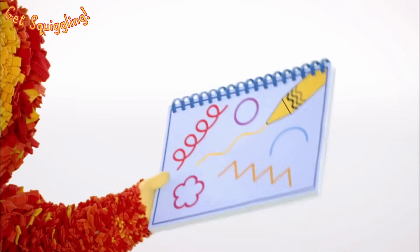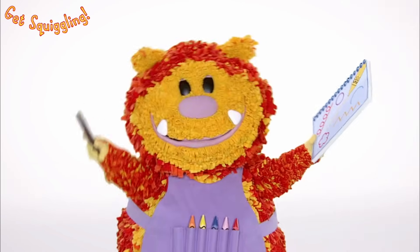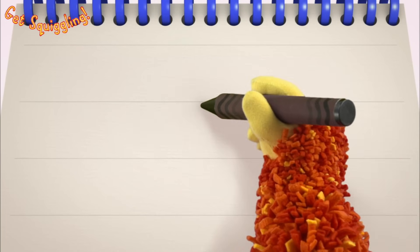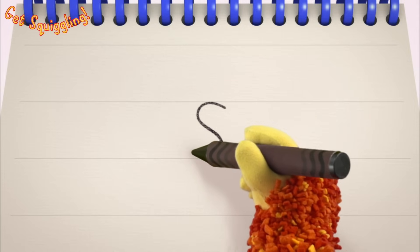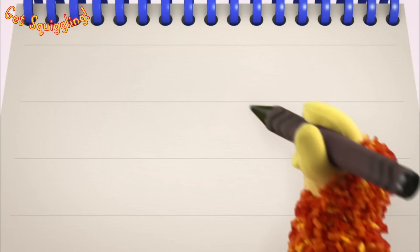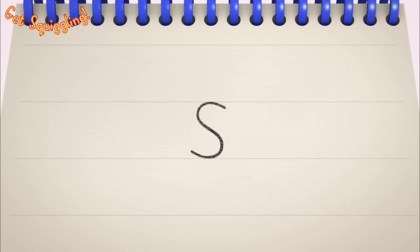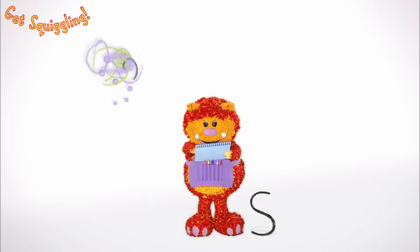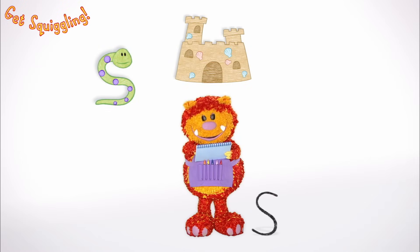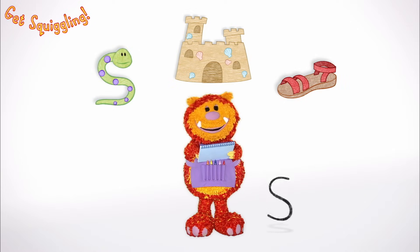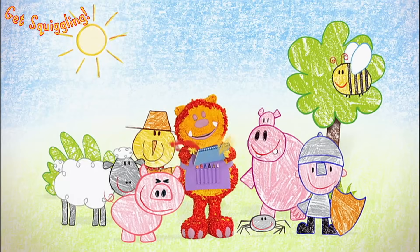Have you got your squiggle pads and squiggle sticks ready? Let's get squiggling! Holding your squiggle stick like this, move it round and round the other way — the letter S. Let's squiggle it again: go round and round the other way — the letter S. Shall we squiggle some things that start with the letter S? A snake, a sandcastle and a sandal — they all begin with the letter S.